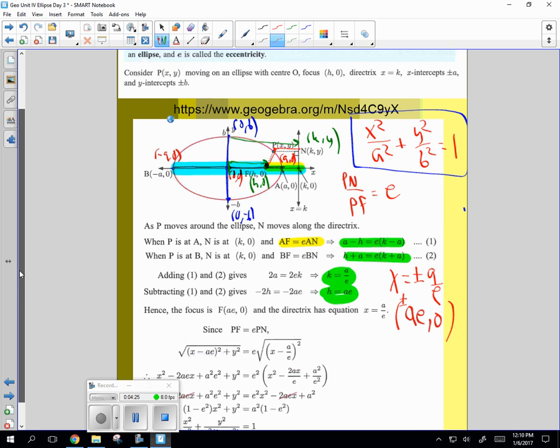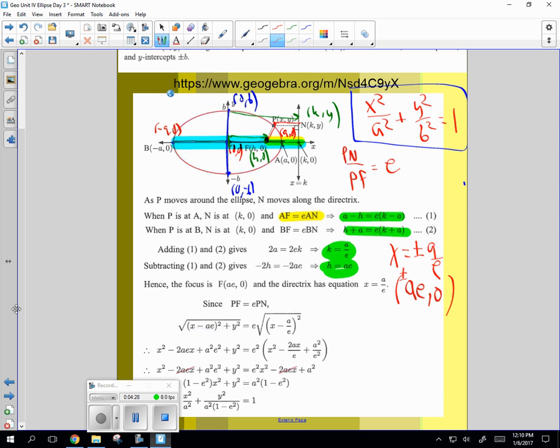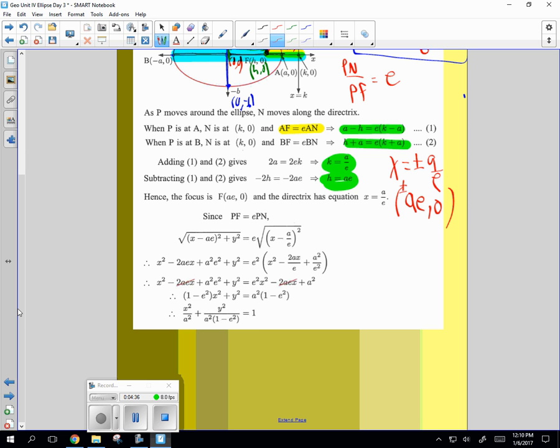Then if you use the idea that pf equals e times pn with these substitutions, and you do all the algebra, you're going to be able to find that x squared over a squared plus y squared over a squared times one minus e squared equals one. This is what b squared is equal to, a squared times one minus e squared. That's a helpful formula because if we knew a and we knew e, we could find b, we could find the focal point, and we could find the directrix.